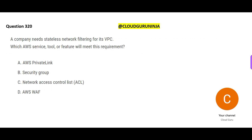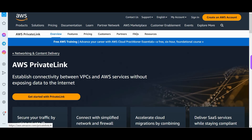Next question: a company needs stateless network filtering for its VPC — which AWS tool or feature will meet this requirement? When I see the word 'network filtering' I look for the matching network option. AWS PrivateLink establishes connectivity between VPCs and AWS services without using the public internet — it's like owning a dedicated private line — but it is not used for network filtering.